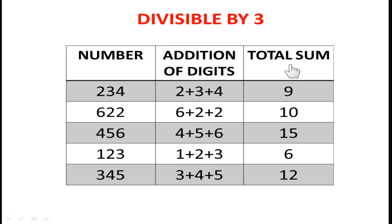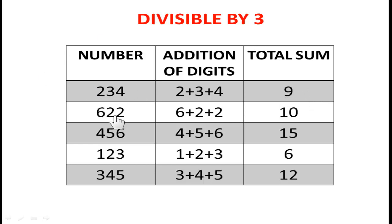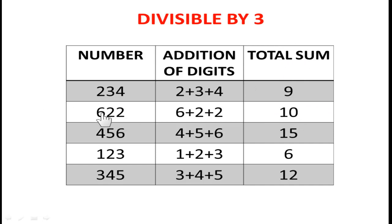Nine divided by three equals three, so 9 is divisible by 3 — that's why 234 is divisible by 3. If the sum of digits is divisible by 3, then the total number is also divisible by 3. For example, take 622: the sum of digits is 6 plus 2 plus 2 equals 10. Since 10 is not divisible by 3, the total number 622 is also not divisible by 3.